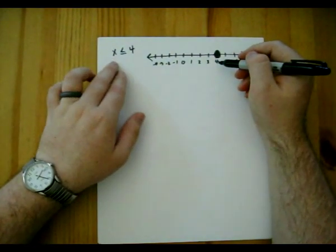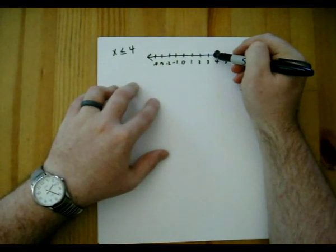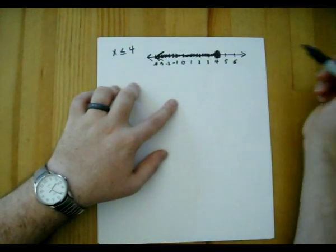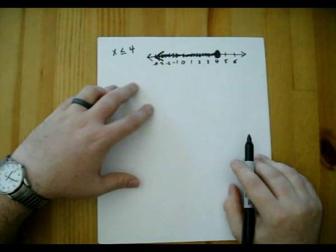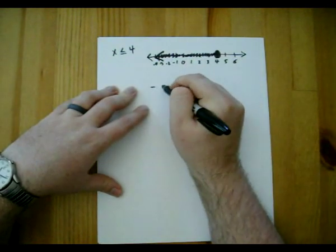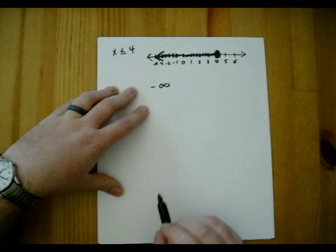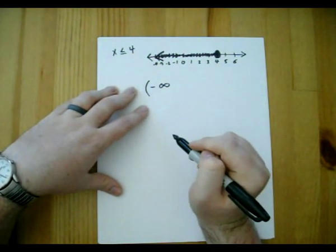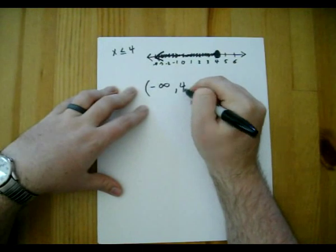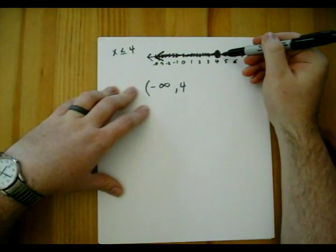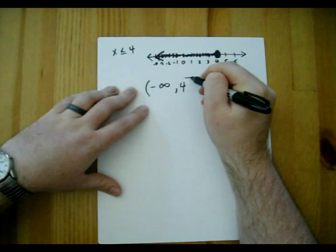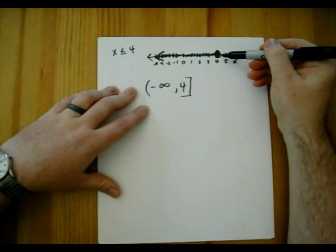We're also looking at all things less than 4, so we shade to the left and put an arrow. For interval notation, the leftmost endpoint is negative infinity — it goes on forever to the left — so we use an open bracket. The rightmost endpoint is 4, and this time we are including 4 since it's a solid dot, so instead of an open bracket we use a closed bracket. This tells us that 4 is included in the solution.